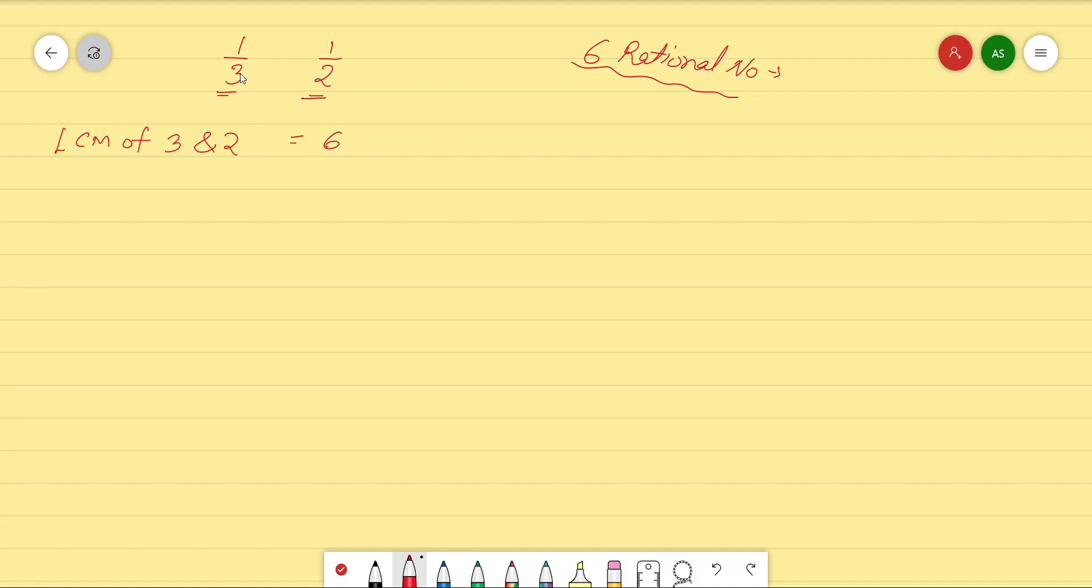To make this 3 as 6, we will multiply the numerator and denominator by 2, so we will be getting 2 by 6 over here. Same way, to make 1 by 2 with the denominator 6, we will multiply the numerator and denominator by 3. We will be getting it over here as 3 by 6.